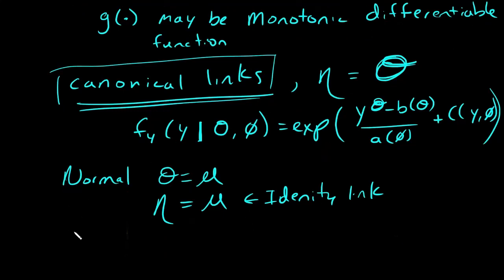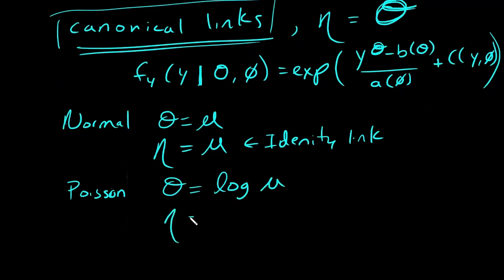For the Poisson distribution, when we rearranged and figured out what theta was for this distribution, once we made it look like an exponential family distribution, we found that theta was log of mu. So the canonical link then would just be nu equals log of mu. This is called the log link.